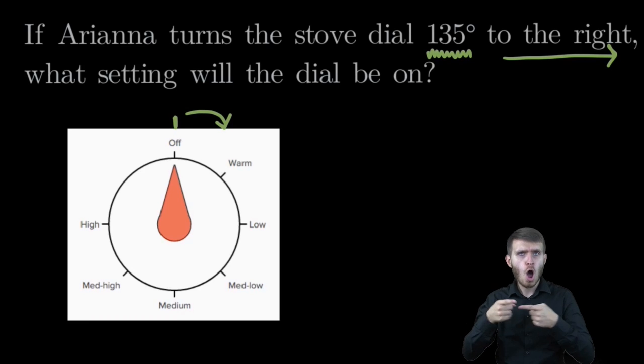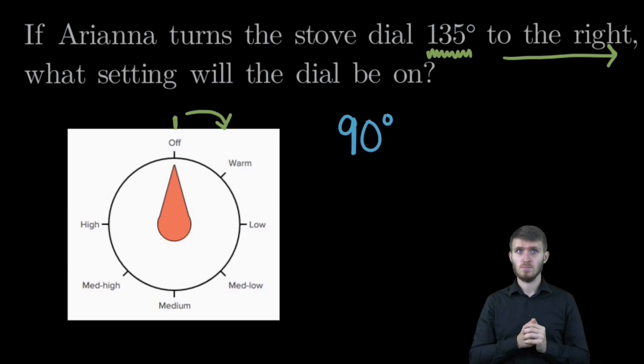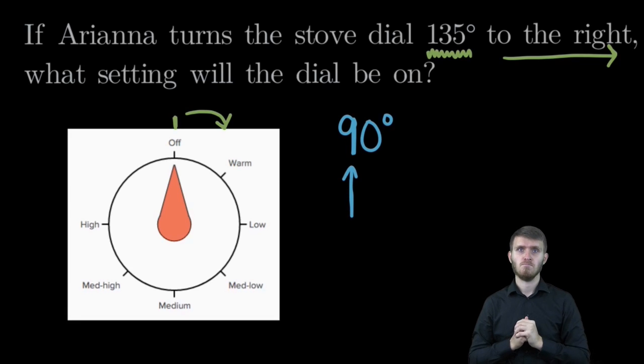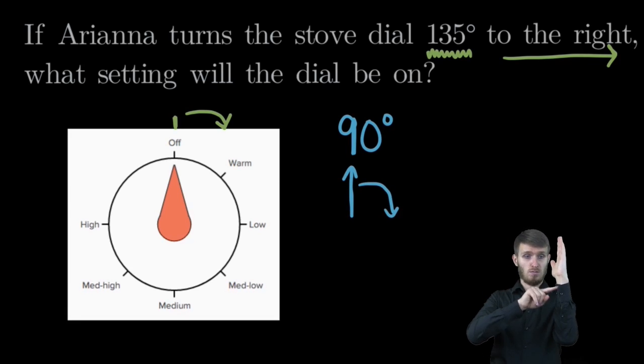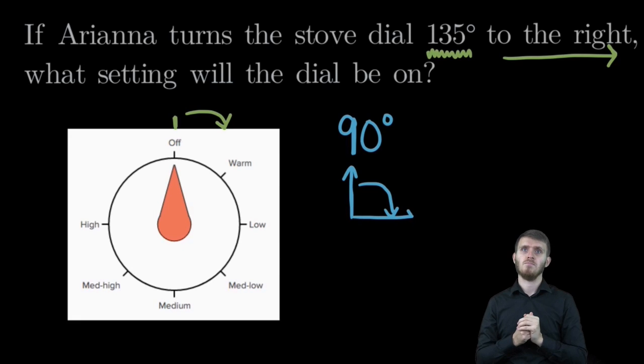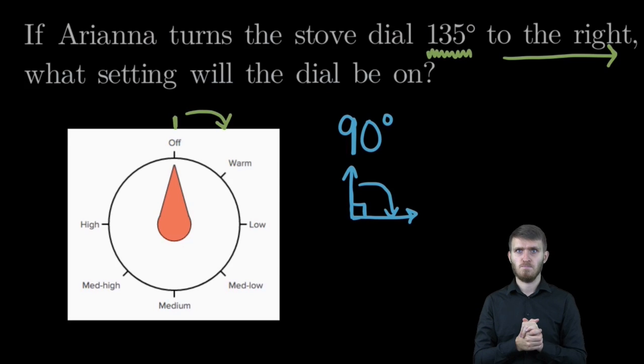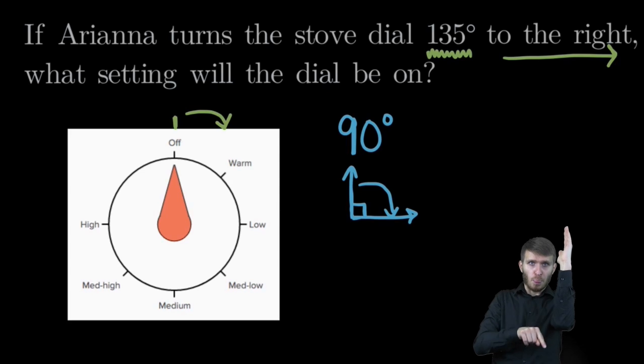One thing I know, one angle that we see a lot is a 90-degree angle. A 90-degree angle, if we start up at the top like our dial and turn 90 degrees, we're going to end up with an angle like this. An angle where we can put a square in the middle and finish the square. It looks like a square angle. So this is a 90-degree angle.